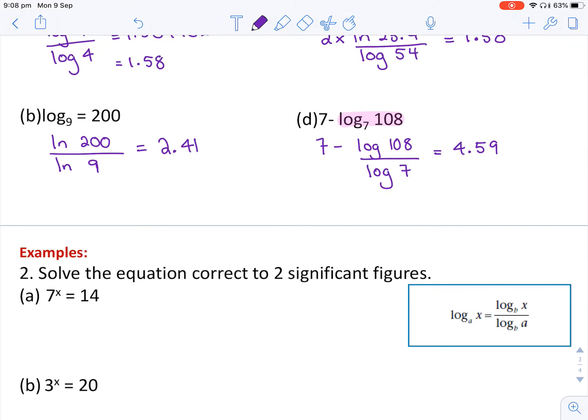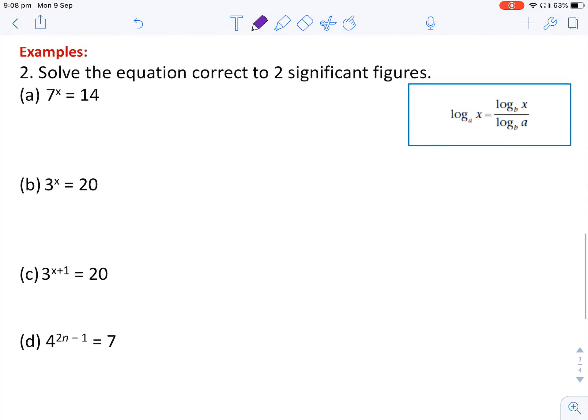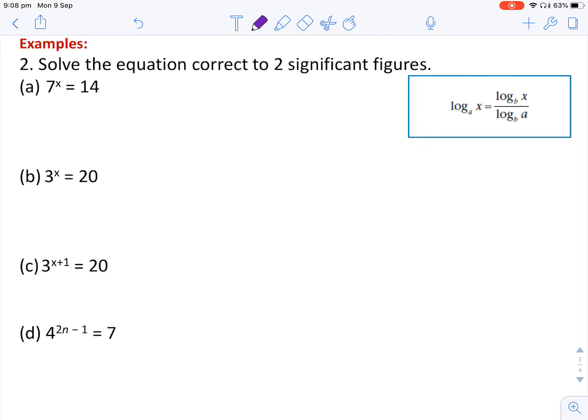Let's have a look at some slightly harder questions. Here, we're asked to solve these equations to two significant figures. There's two ways of doing this. I'll show you both methods for the first example, and then we'll stick with one method for the remainder. Feel free after the first example to pause the video, have a go at b, c, and d on your own, and then come back to see how they're done.